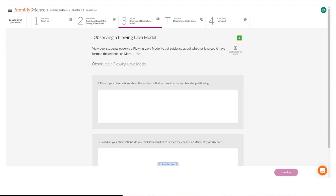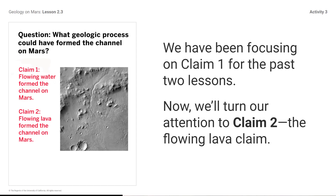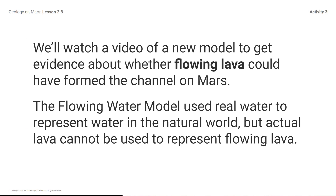Here's what your student screen looks like for this part of the lesson. We've been focusing on Claim 1 for the past two lessons. Now we'll turn our attention to Claim 2, the Flowing Lava Claim. We'll watch a video of a new model to get evidence about whether flowing lava could have formed the channel on Mars.